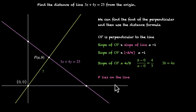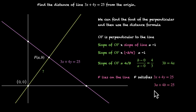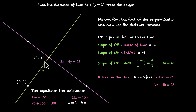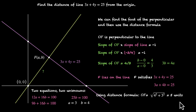F lies on the line, which means the coordinates of F satisfy the equation of this line — we can put X as A and Y as B to get our second equation. Two equations, two unknowns — we can solve them by elimination or substitution. We get B as 4 and A as 3, which means the foot of the perpendicular is (3, 4). Using the distance formula, that's square root of 4² plus 3², which is 5. So this is Method 1.